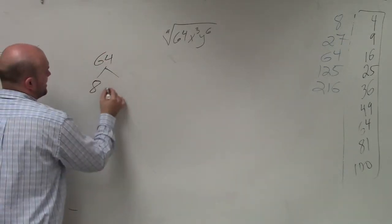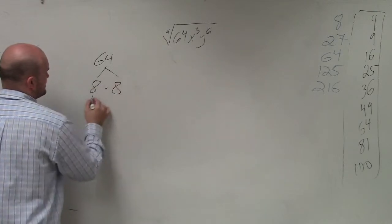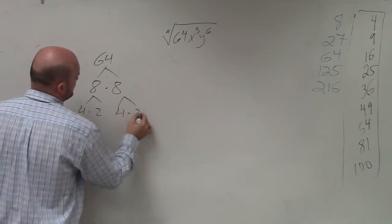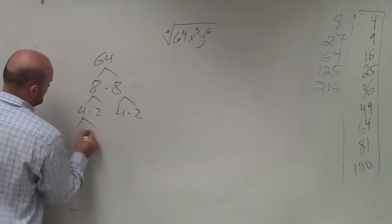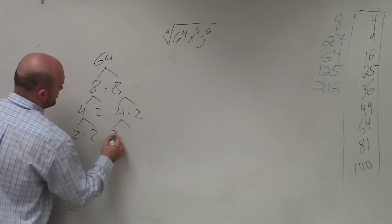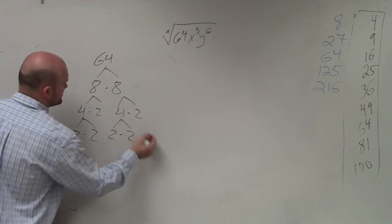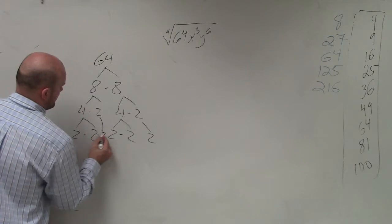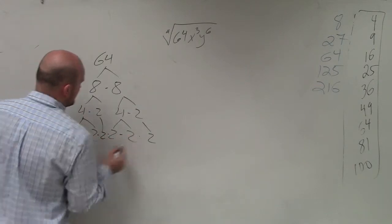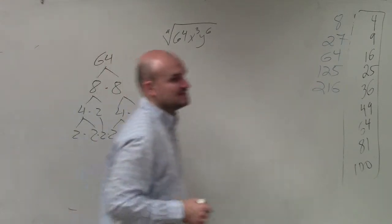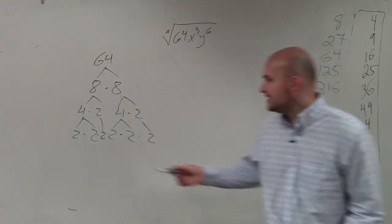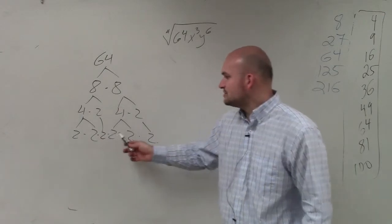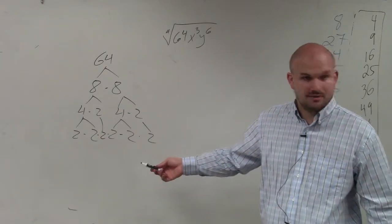So we obviously would have 8 times 8, then 4 times 2, 4 times 2, 2 times 2, 2 times 2. So when you count this up, 64 can be the same thing as 2 times 2 times 2 times 2 times 2 times 2, right?